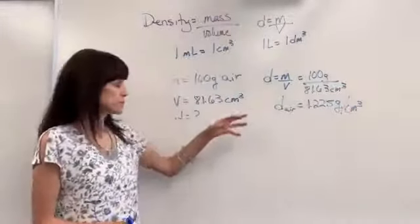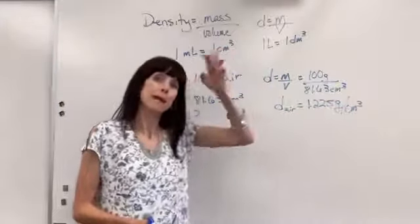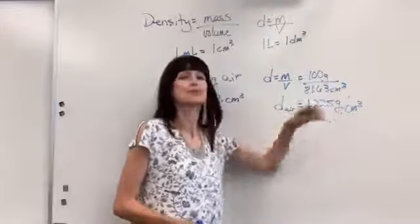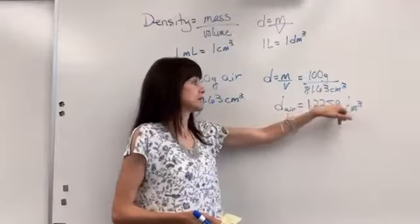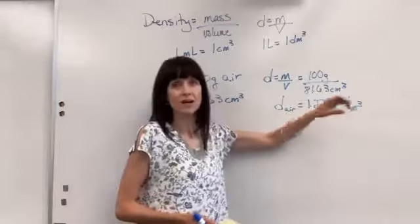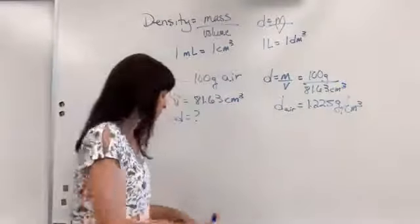Little note on this. Notice the unit for density grams over centimeter cubed, mass over volume, that is called a derived unit because we're combining the mass unit and actually three of the length units. So that's a derived unit. Okay let's do another one.